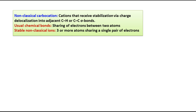In the case of non-classical carbocations, they receive stabilization via charge delocalization into adjacent C-H bonds or C-C sigma bonds. There will be some special kind of stabilization occurring via delocalization of electron density into the adjacent C-H sigma bond or adjacent C-C sigma bond. In usual chemical bonds, electrons are shared between two atoms, but in stable non-classical ions, three or more atoms may actually share a single pair of electrons — most examples involve three atoms sharing a single pair of electrons.